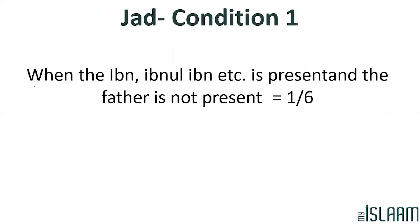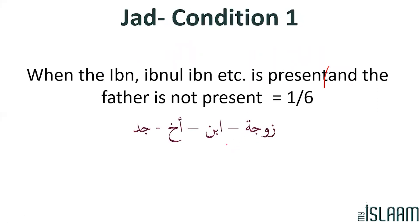Condition number 1 reads: when the Ibn, Ibn al-Ibn, etc. is present and the Ab is not present, then the Jad will receive one-sixth of the inheritance. For example: Zawjah, Ibn, Akh, Jad. We can see that the Ibn is present. The Ab is not present anywhere. Therefore the Jad will receive one-sixth.